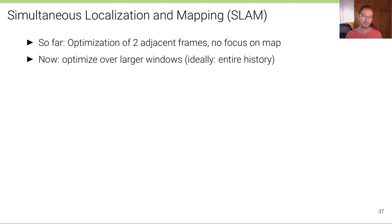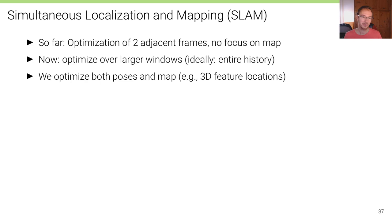Now, in this unit, we're going to consider optimization over larger windows, ideally the entire history. That means all of the frames that we have recorded so far. And we optimize both poses and the map. That could be, for example, the 3D feature locations in indirect SLAM.